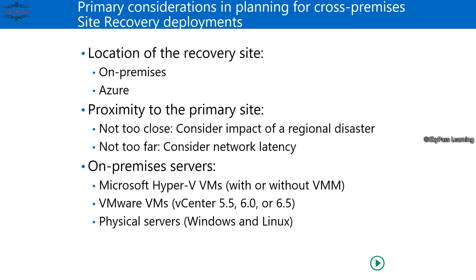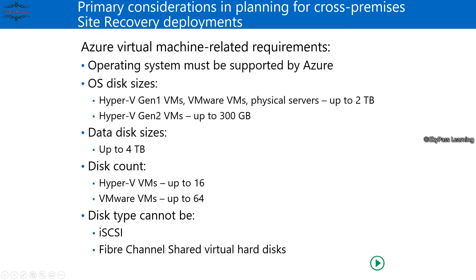Regarding disk sizing: the OS disk can be supported up to 2TB for Gen 1, and Gen 2 is supported up to 300GB. Data disk can be up to 4TB in size. The disk count for Hyper-V VMs can be up to 16, and for VMware it can be up to 64. Channels like SCSI or Fibre Channel are also relevant here.